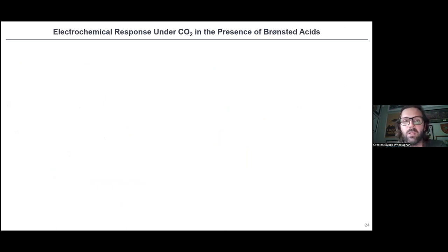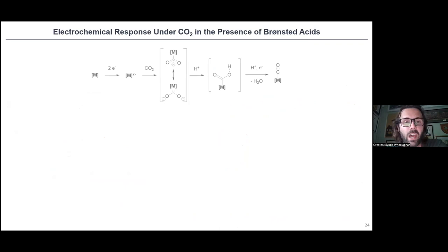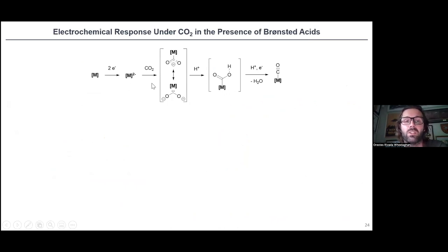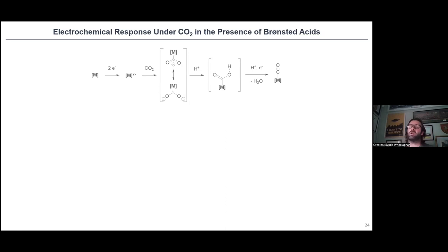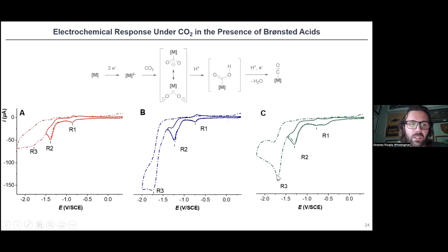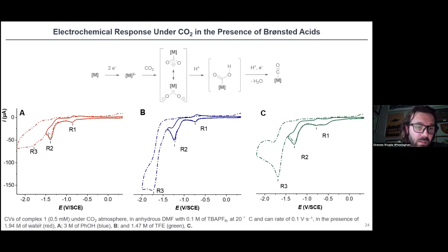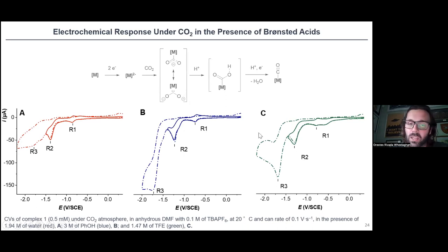We therefore studied the electrochemical response under CO2 in the presence of Brønsted acids — protons. Protons are known to stabilize intermediates generated during electroreduction of the metal in the presence of CO2, and also facilitate cleavage of the oxygen-carbon bond through water generation. We show the CV under CO2 in DMF with different proton sources: water (red), phenol (blue), and trifluoroethanol (green) — going from red to green increases the acidity of the proton source in the organic solvent.